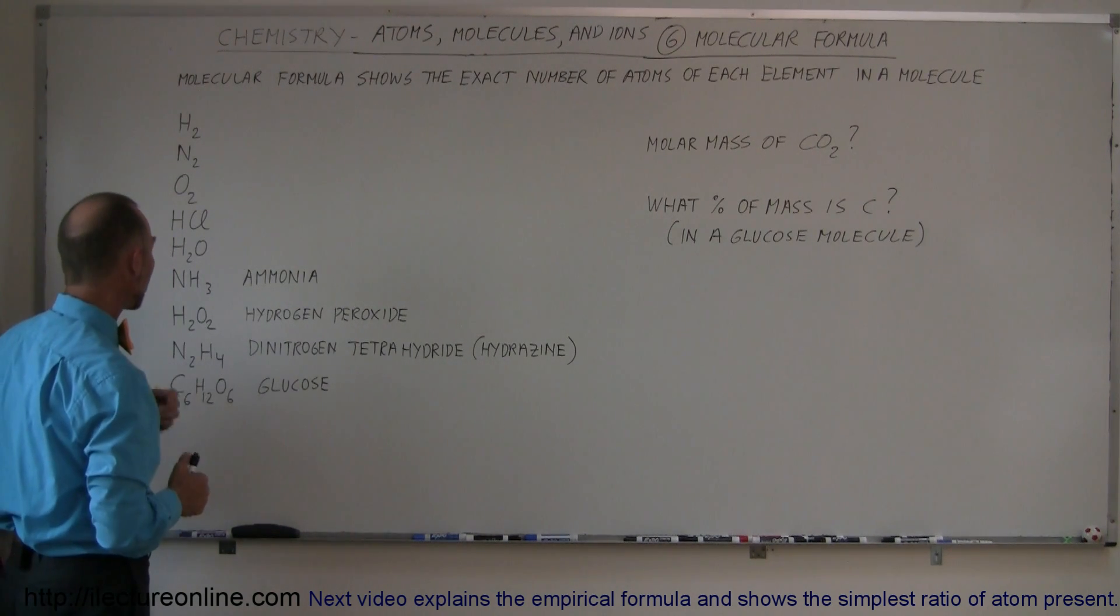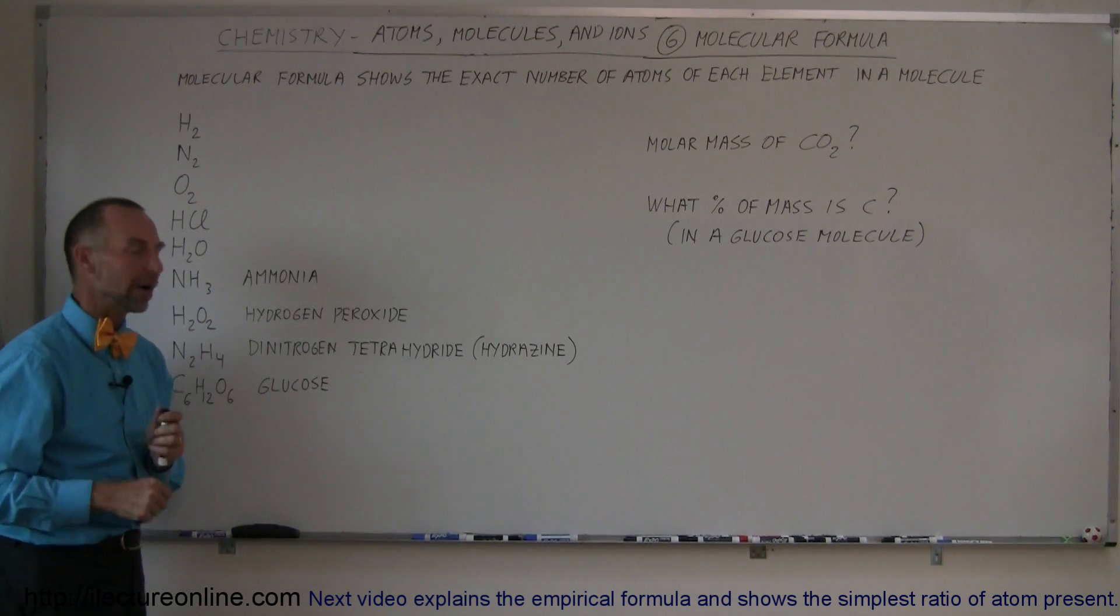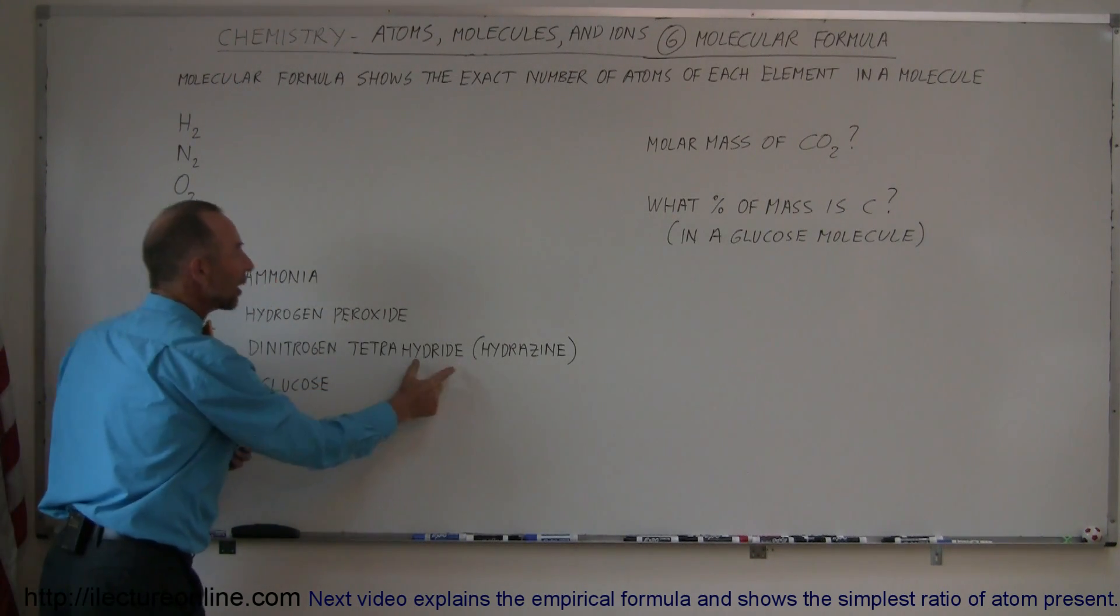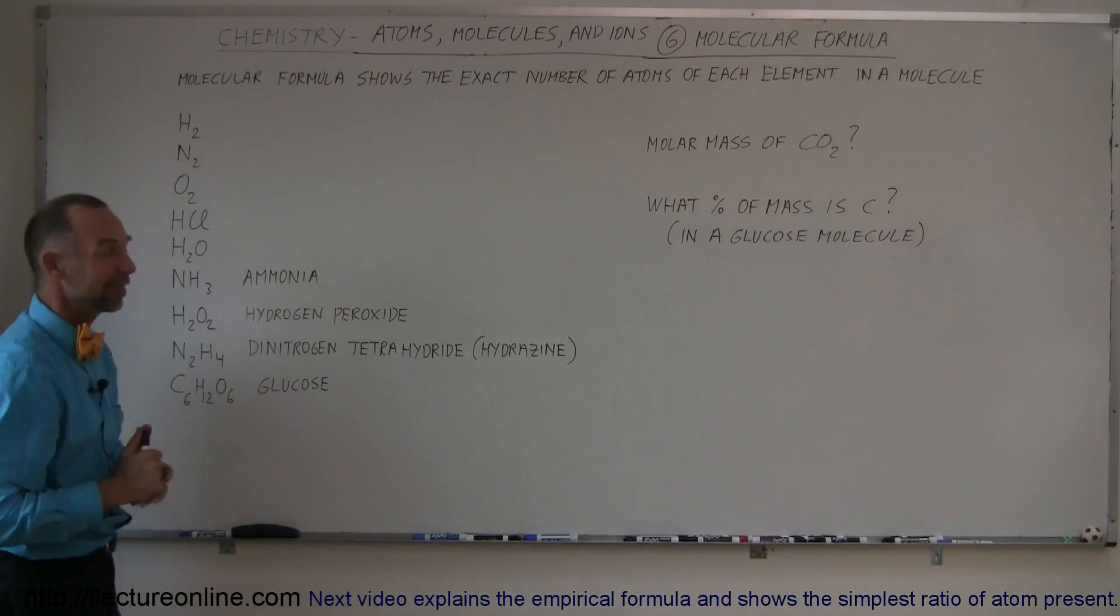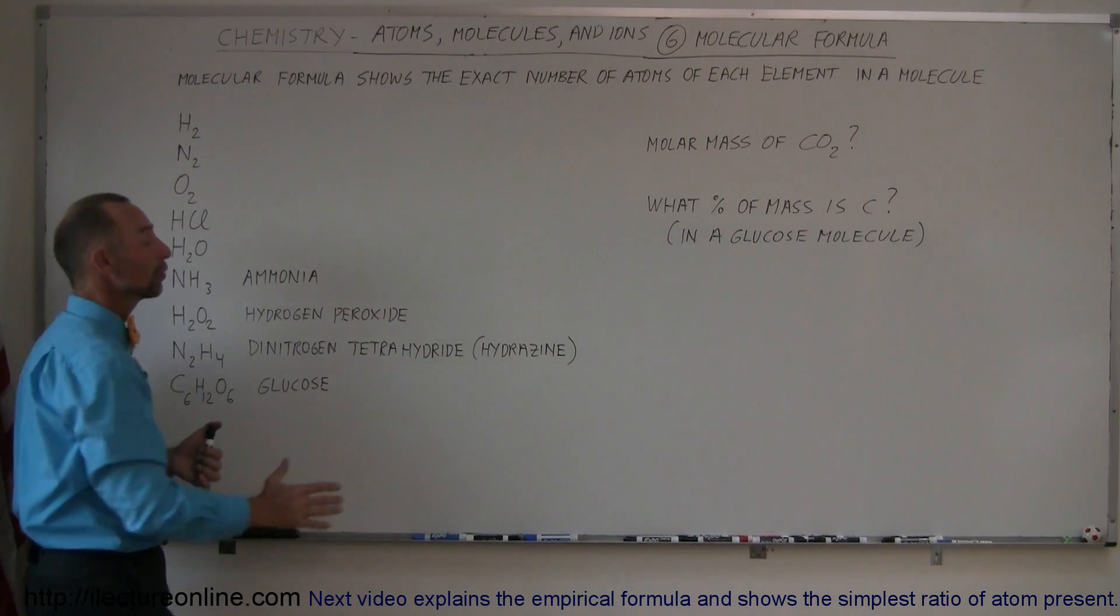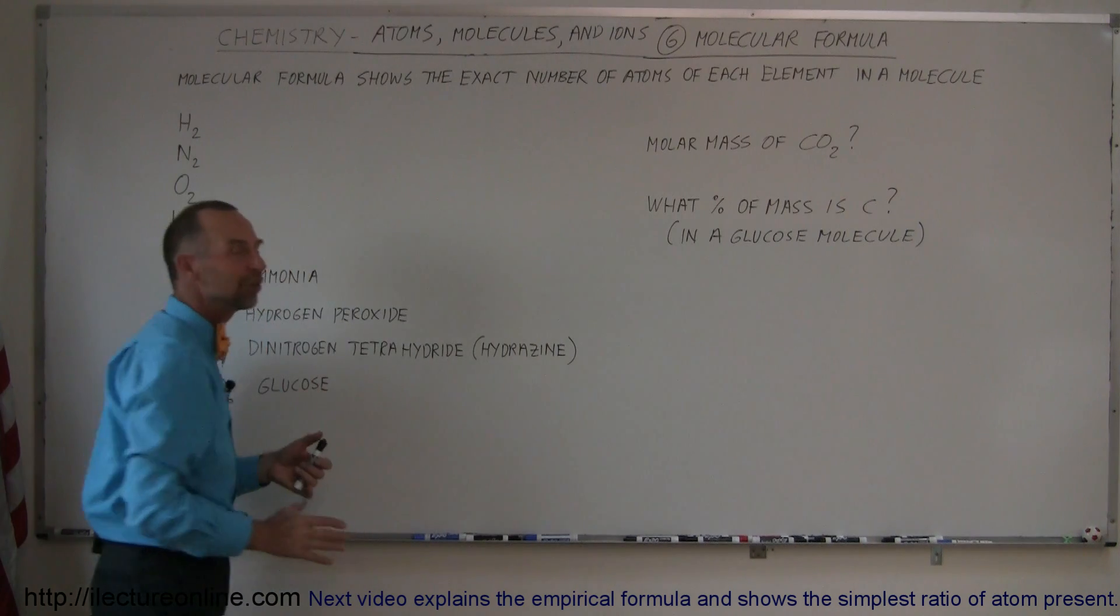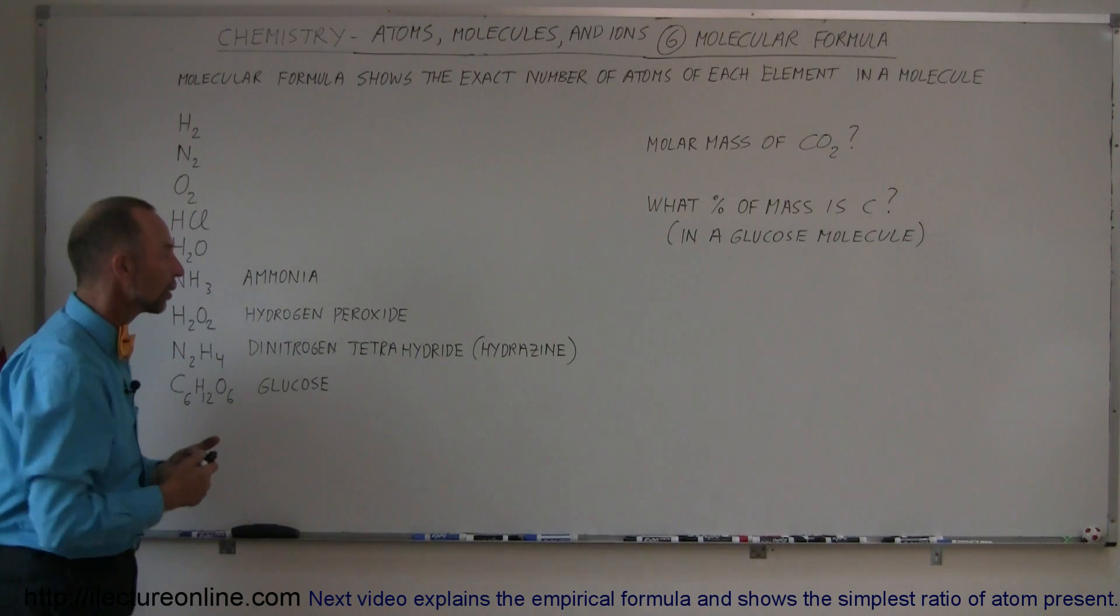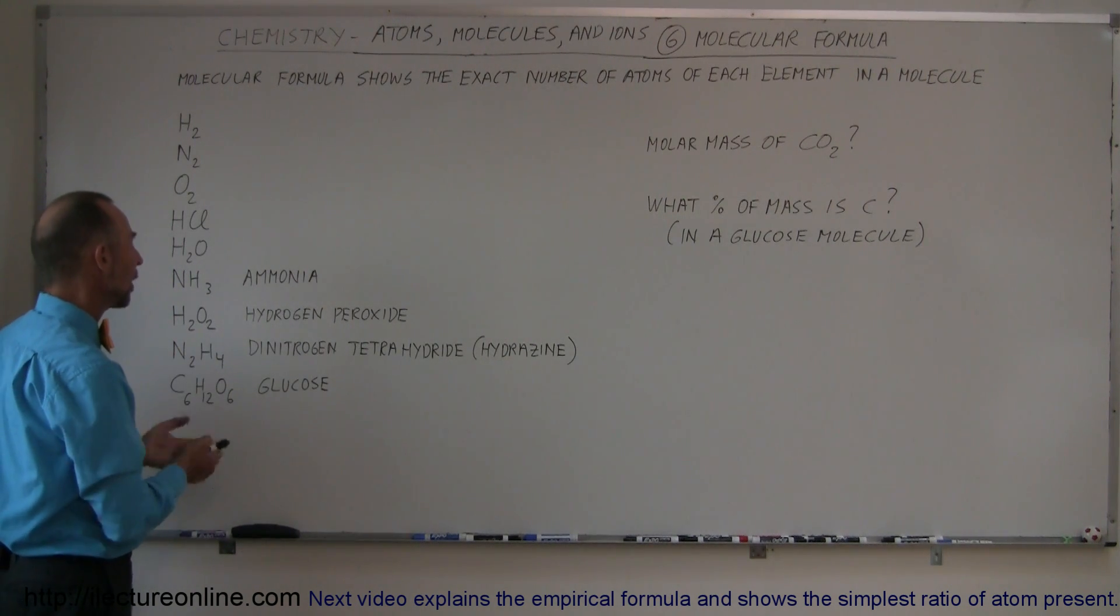Here we have what we call dinitrogen tetrahydrite. Di means two and tetra means four. So there's two nitrogen atoms and four hydrogen atoms. Or we can also call it hydrazine, which is a common name for this particular molecule. It's a very flammable molecule, so therefore it's used for rocket fuel.